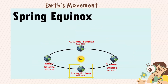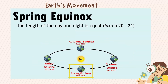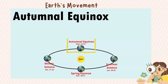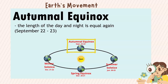Spring Equinox: the length of the day and night is equal. It can happen from March 20 to 21. Autumnal Equinox: the length of the day and night is equal again, and it can happen on September 22 to 23.